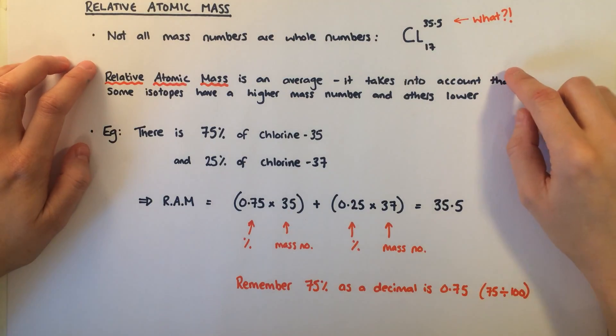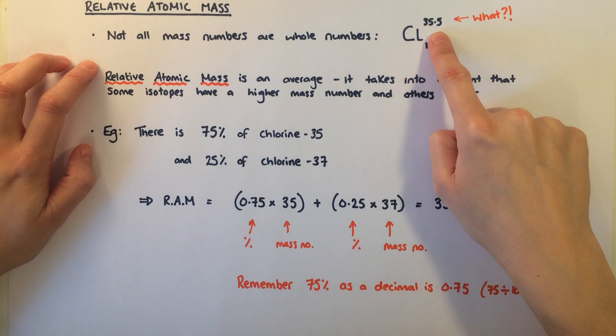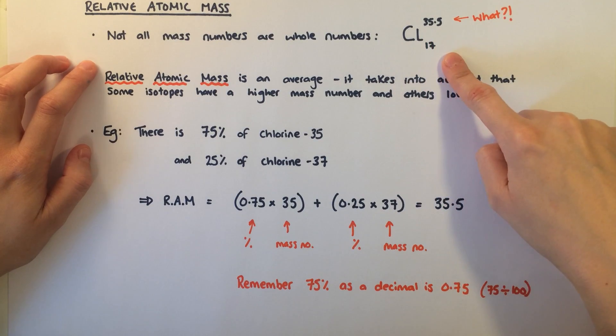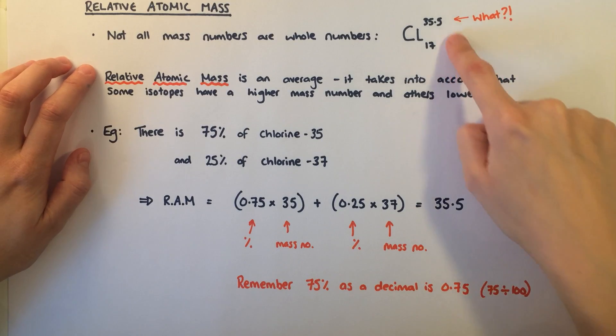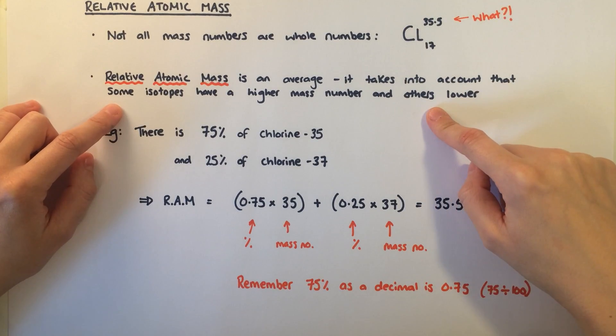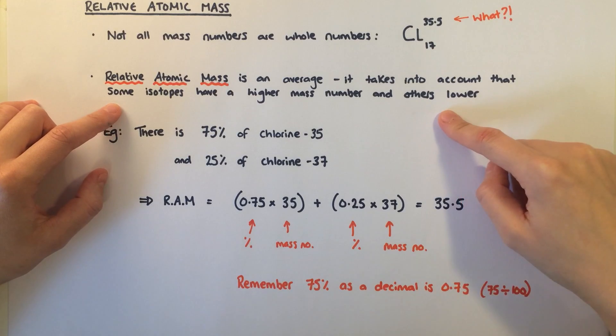When you look at the periodic table, you will see that not all mass numbers are whole numbers. For example, chlorine has a mass number of 35.5. This is because the number actually being stated is the relative atomic mass. It accounts for the fact that there are different isotopes of chlorine, some with a higher mass number and some with a lower mass number.